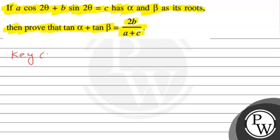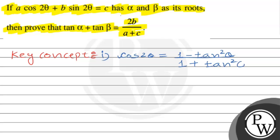Main aapko key concepts bata-ta hoon jo aapki help karenge question solve karne mein. First key concept: cos 2θ is equal to (1 minus tan²θ) divided by (1 plus tan²θ). Second key concept: sin 2θ is equal to 2 tan θ divided by (1 plus tan²θ).